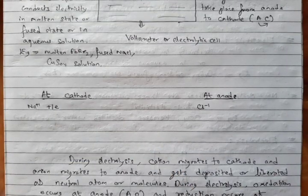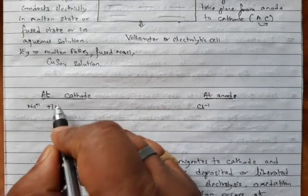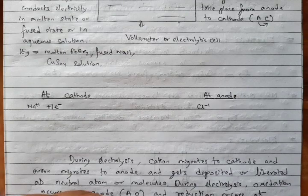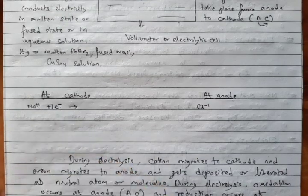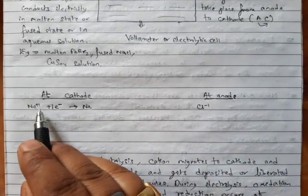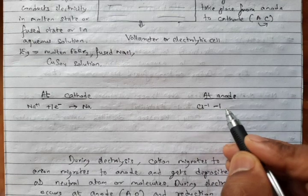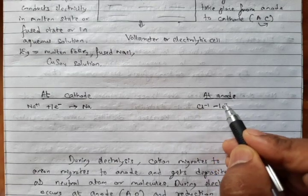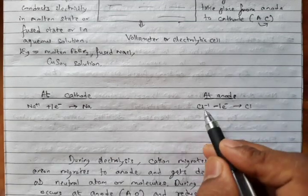At anode: the charge is −1 on Cl⁻, so we write Cl⁻ minus one electron (e⁻). The charge disappears and we get neutral Cl. Sodium is a metal — metals can exist alone — so it gets deposited (downward arrow means deposited). Chlorine is a non-metal and requires company, so one chlorine combines with another to form Cl₂ gas, and being a gas it gets liberated.